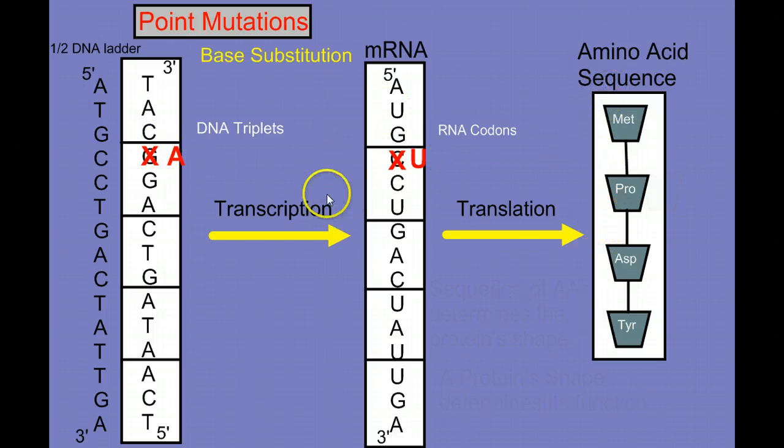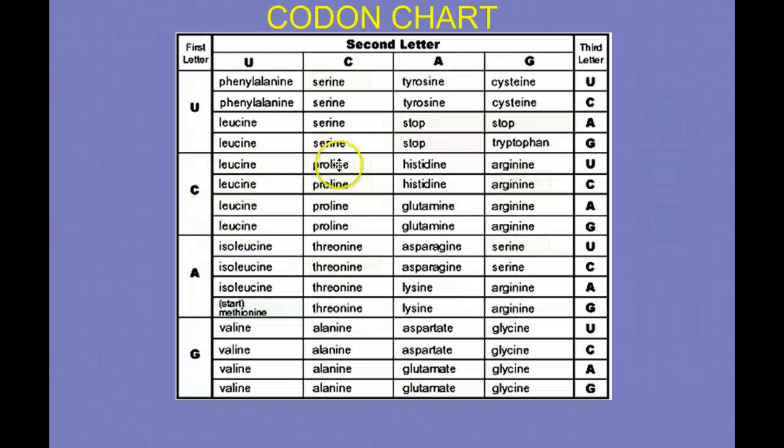that single base substitution shows up when we transcribe from DNA to RNA so that this C, the complement to the A, is a U. Now, what does that mean for our amino acid sequence? Well, the codon CCU, when we look at a codon chart, codes for proline. Look, we can see it here: CCU, proline.